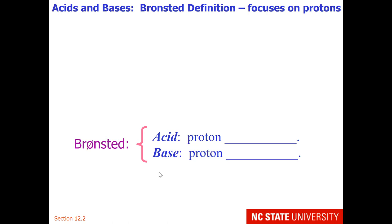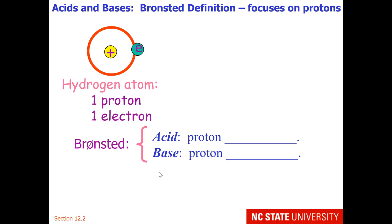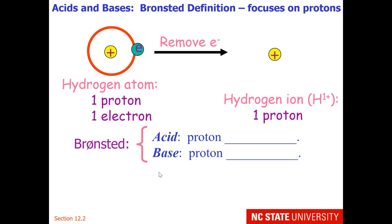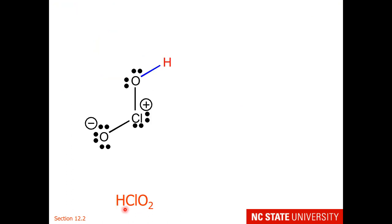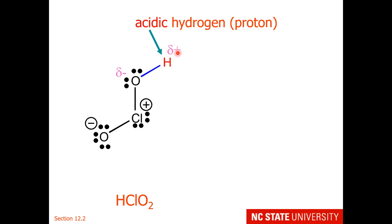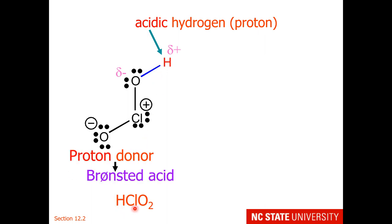Our last definition of acids and bases is the Brønsted definition, which focuses on protons. A hydrogen atom has one proton and one electron; if we remove the electron we're left with a hydrogen ion, which we simply call a proton. A Brønsted acid is a proton donor; a Brønsted base is a proton acceptor. For example, HClO2 — in many acid molecules the hydrogen is typically attached to the oxygen. This hydrogen is already partially positive, so all we need to do is break this bond. We would call HClO2 a proton donor or Brønsted acid.